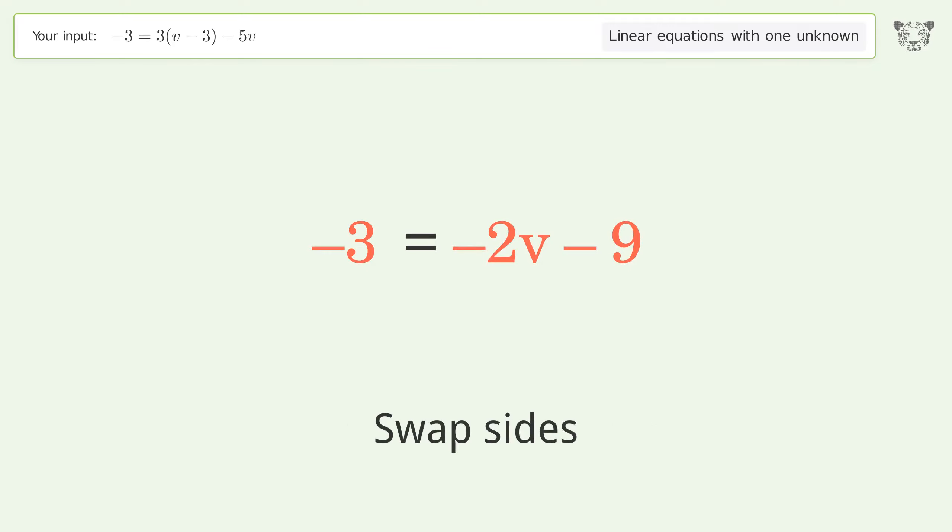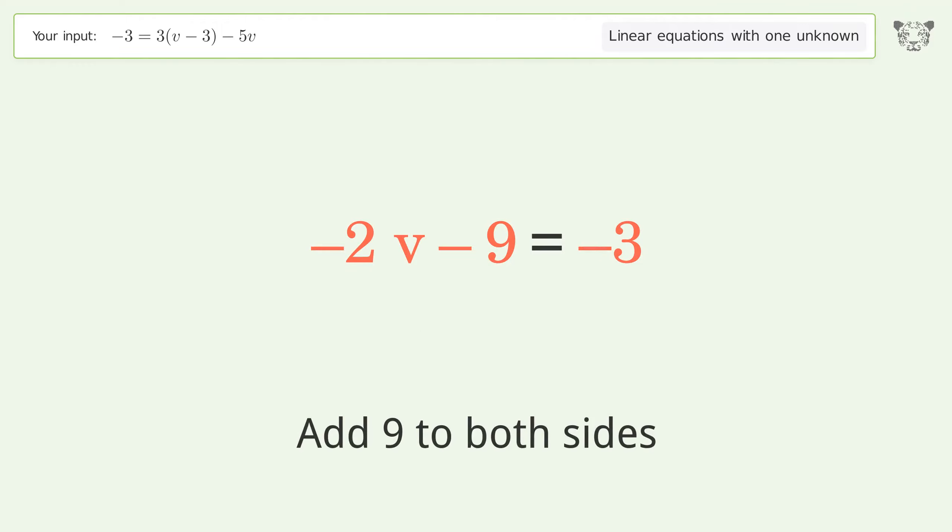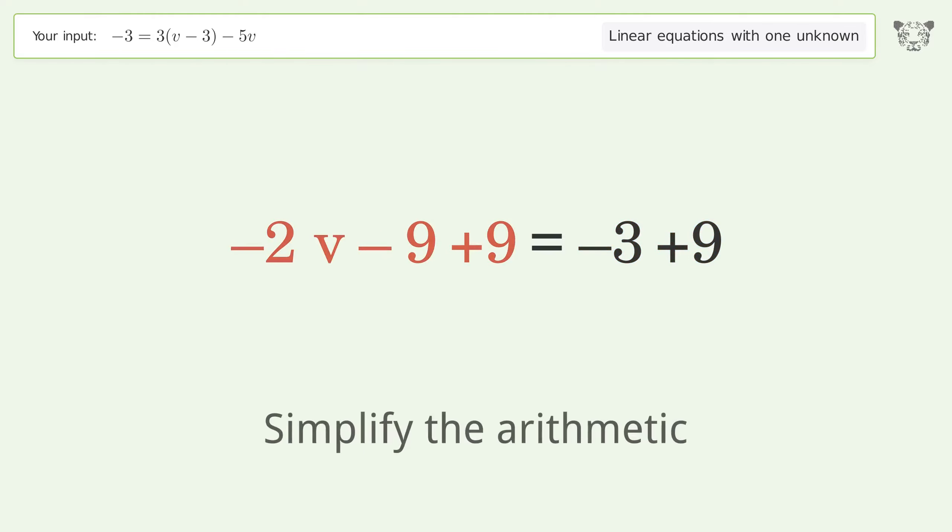Swap sides. Group all constants on the right side of the equation. Add 9 to both sides. Simplify the arithmetic.